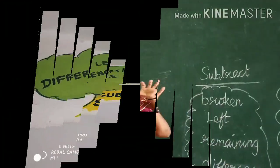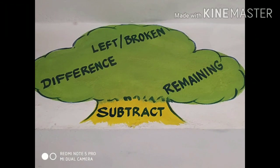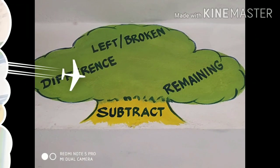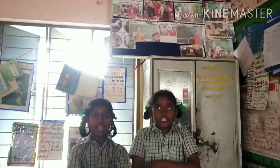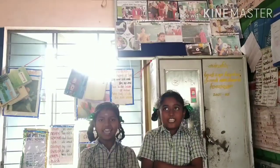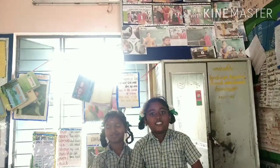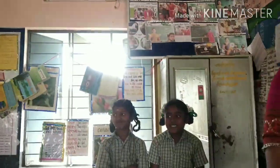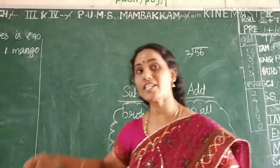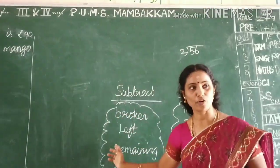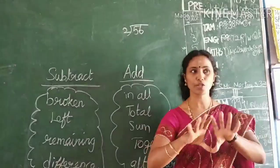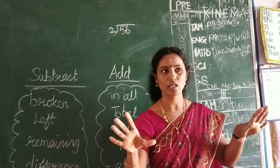Then for subtraction, there are also specific keywords to look for. Now, are you clear about when to do addition and subtraction? Good. Now let's look at how to decide whether to do multiplication or division.